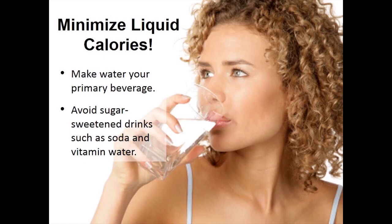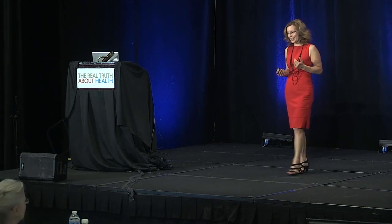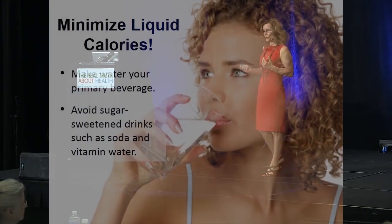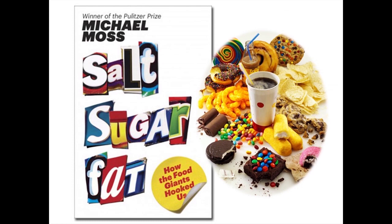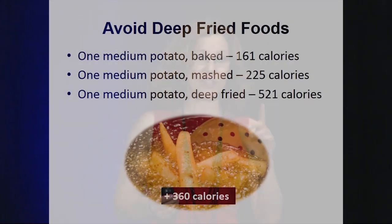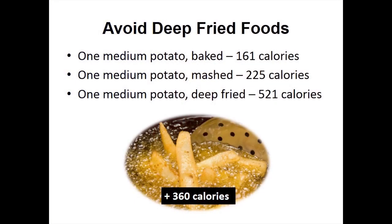Step 10 is to maintain a healthy body weight. Minimize liquid calories — do not drink your calories, as they don't register with your appetite control center. Drink water or green juices instead, but no sugar-sweetened beverages. Limit or eliminate foods with added fat, sugar, and salt — the book Salt Sugar Fat explains how these foods are so addictive. Avoid deep-fried foods: one potato with about 160 calories becomes french fries with 521 calories — adding 360 calories of pure fat.